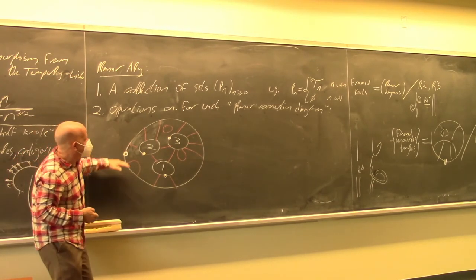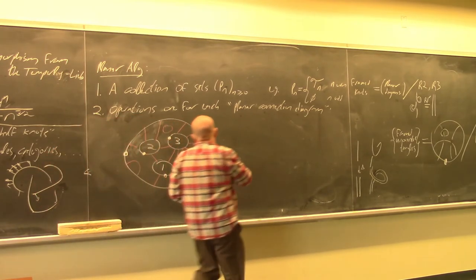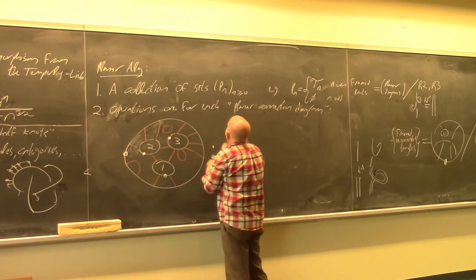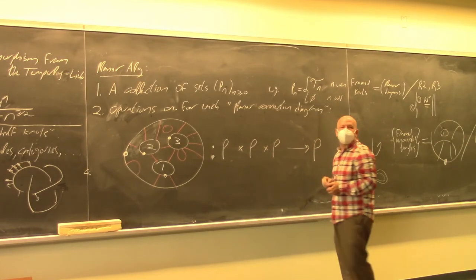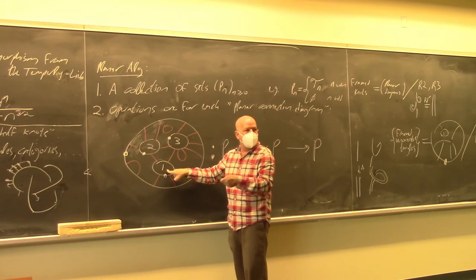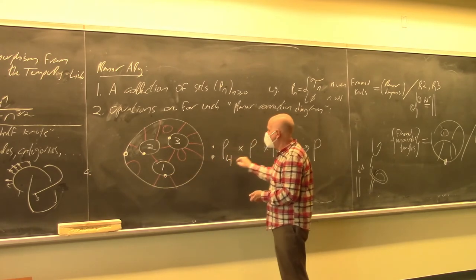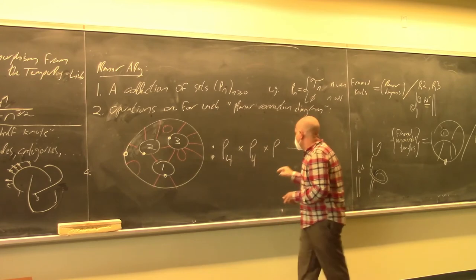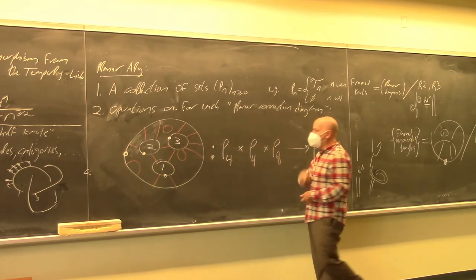This indexes the set of operations. The operation corresponding to a diagram is a map from a product of P spaces to a single P space. The first argument corresponds to the first hole — if the first hole has 4 ends, it contributes P_4; the second hole contributes its P space similarly; the third input hole with 8 ends contributes P_8. The output P space is determined by counting the red strands on the outside circle.